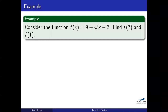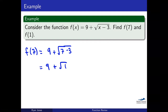Let's look at a function and evaluate it. We'll find F(7) and F(1). For F(7), we plug in 7 where we have an x: 9 plus the square root of 7 minus 3 equals 9 plus the square root of 4 equals 9 plus 2 equals 11. So we get the point (7, 11).